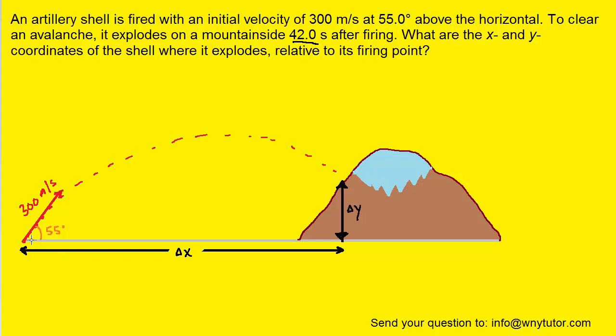Now, before we can begin to solve for that, what we need to do is to break the velocity into its x and y components. For the x component, we can see that it is adjacent to the 55 degree angle. Therefore, we can use the cosine to find that x component. Specifically, it will be 300 times the cosine of that 55 degree angle.